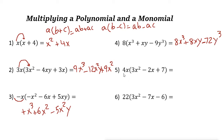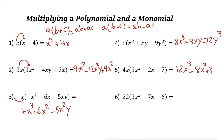Next one: 4x times (3x² minus 2x plus 7). 4x times 3x²: 4 times 3 is 12, x times x² is x³ (1 plus 2 equals 3). Minus: 4x times 2x gives 4 times 2 is 8, and x times x is x squared, so minus 8x². Plus: 4x times 7 is plus 28x.